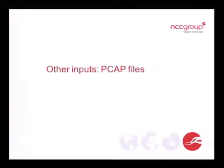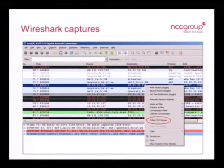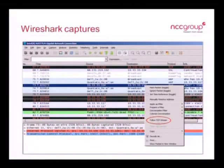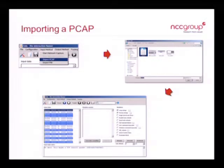For other inputs, rather than using a real client and server, perhaps you've captured some data and want to use a PCAP file as input. If you use Wireshark to capture the data associated with the TCP stream you want to fuzz, you need to follow the TCP stream within Wireshark so you're only fuzzing the relevant data. You can then import that PCAP file and it will display it in a similar way to a live capture.